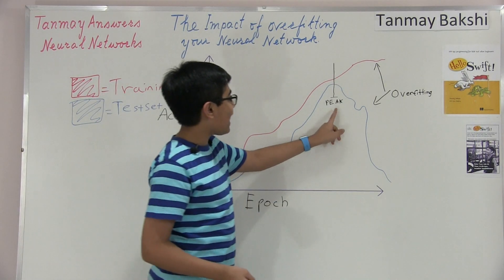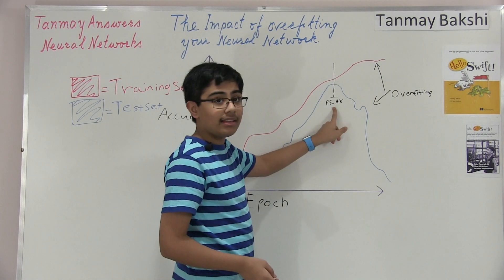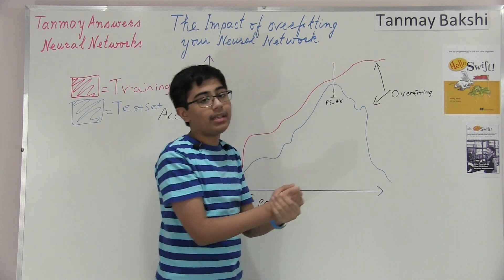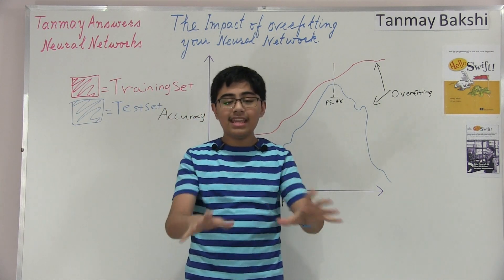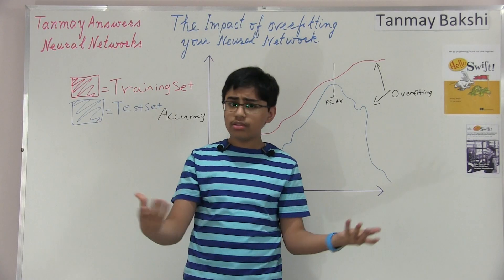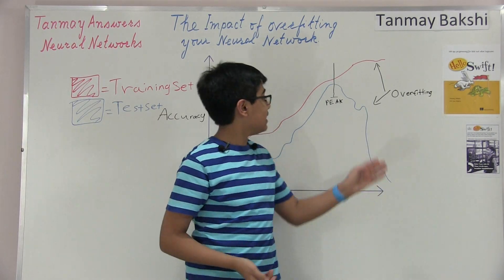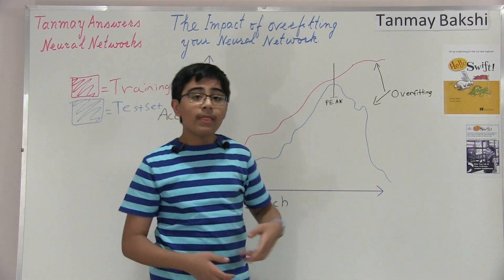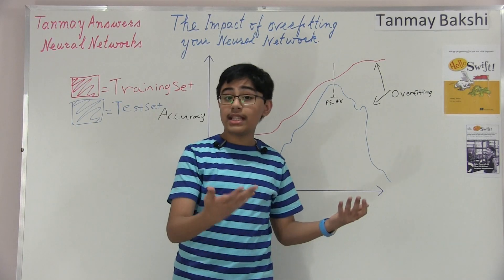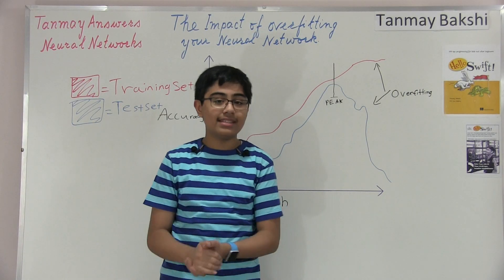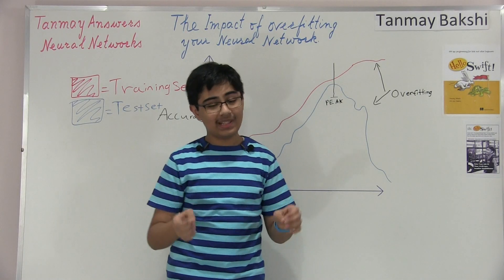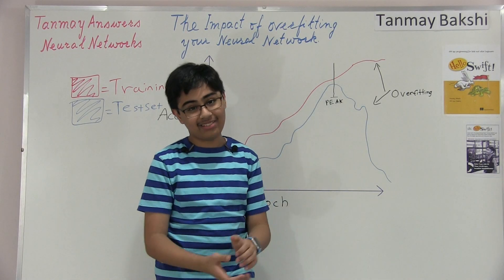That's exactly what the early stopping algorithm will help you to achieve and prevent — by finding that peak in the neural network test set accuracy and stopping your training there, and just using that neural network. And if you don't receive your desired accuracy, then you can of course train your neural network with a different set of neurons, or different types of neurons, really whatever you can in order to increase the accuracy.